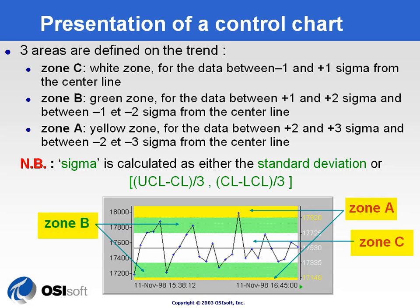As a note, the sigma displayed on the chart could be either the real sigma derived from the calculation, or simply the upper control limit minus the center line divided by three — and the same for the lower side: center line minus the lower control limit divided by three. This means that depending on how you specify the upper control limit — as a constant or as the actual three-sigma from the distribution's statistics — it could mean different things. You could also have non-symmetric zones if the difference between UCL and CL is not equal to the difference between CL and LCL.